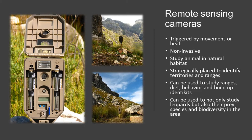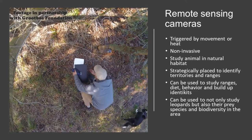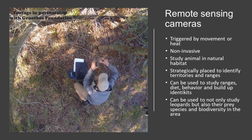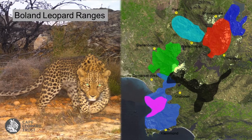These cameras are triggered by movement or heat. They are non-invasive, so we can study the animals in their natural habitat. The cameras are strategically placed to identify territories and home ranges. We can use them to study home ranges, diet, behavior, and we can build up identities.